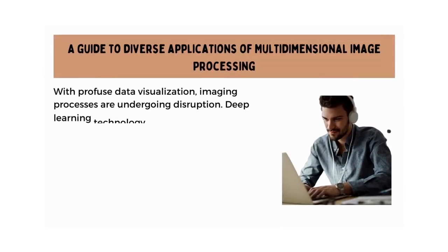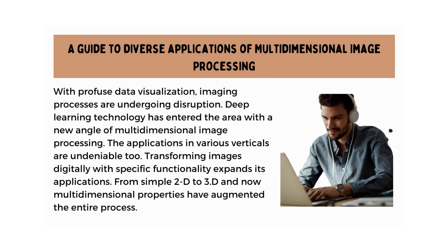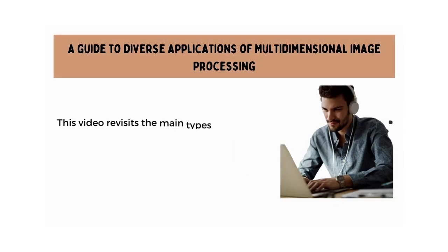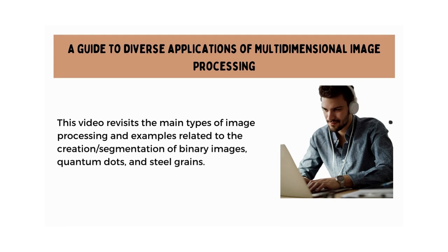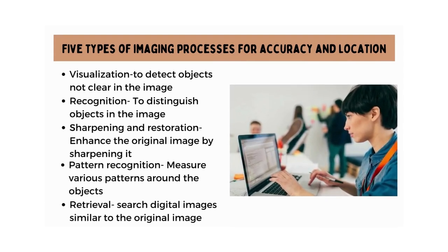Now let's understand the diverse applications of multidimensional image processing. With profuse data visualization, imaging processes are undergoing disruption. Deep learning technology has entered the area with a new angle of multidimensional image processing. The applications in various verticals are undeniable. Transforming images digitally with specific functionality expands its applications. From 2D to 3D and now multidimensional properties have augmented the entire process. This video revisits the main types of image processing and examples related to the creation and segmentation of binary images, quantum dots, and steel grains.